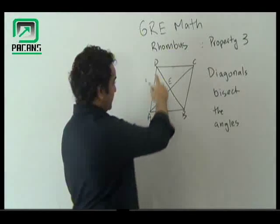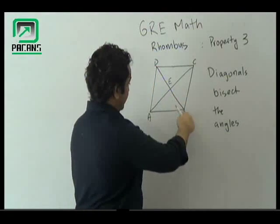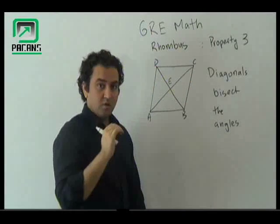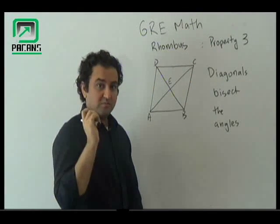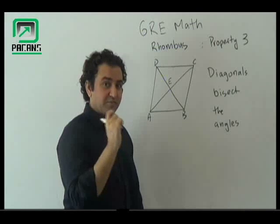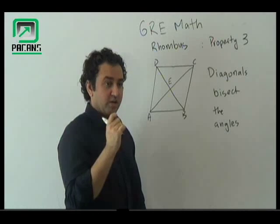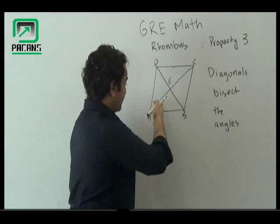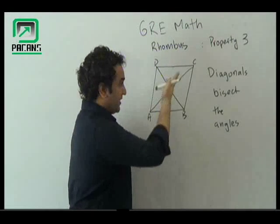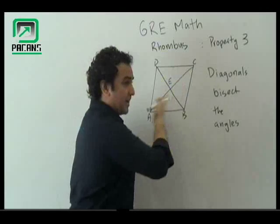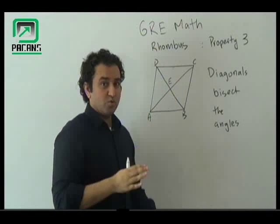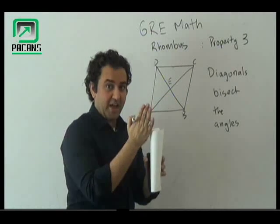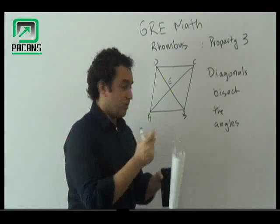Well, this was the diagonal DB and AC. Now, this is a very important rule which I am going to tell you: these diagonals are going to make the angles equal.